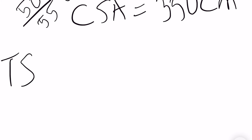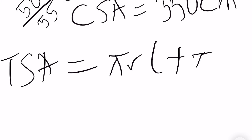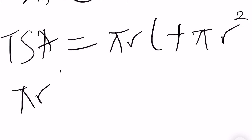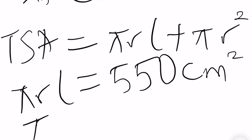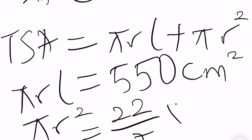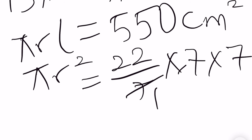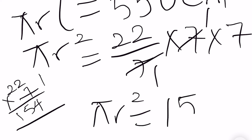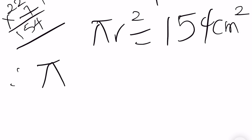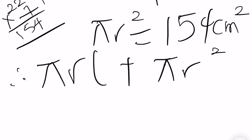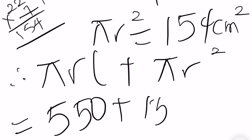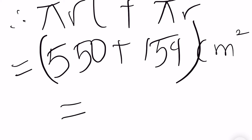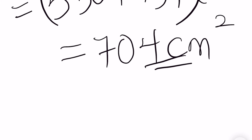For our total surface area, we have it to be pi R L plus pi R squared. So we have our pi R L to be 550 centimeters squared. And our pi R squared will be 22 over 7 times 7 times 7, which gives us 22 times 7 equals 154 centimeters squared. So our TSA equals 550 plus 154, which is 704 centimeters squared.